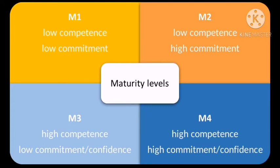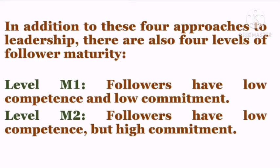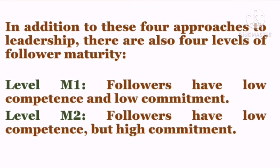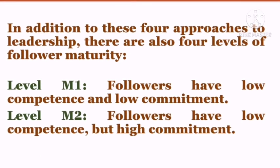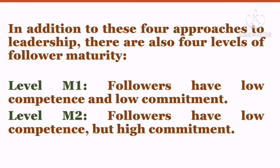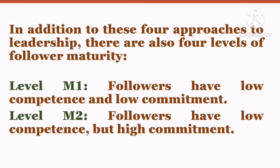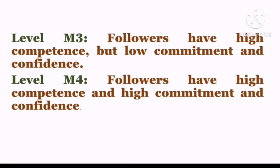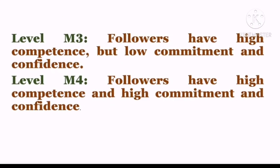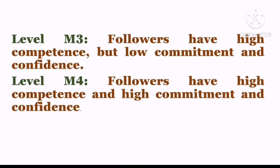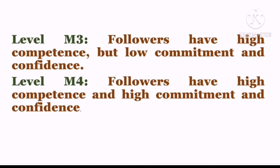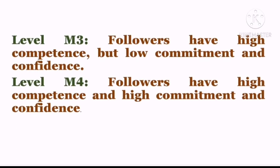Maturity Level 4, M4: followers have high competence and high commitment. To summarize: M1 is low competence and low commitment; M2 is low competence and high commitment; M3 is high competence with low commitment and confidence; and Level 4 is high competence with high commitment and confidence.